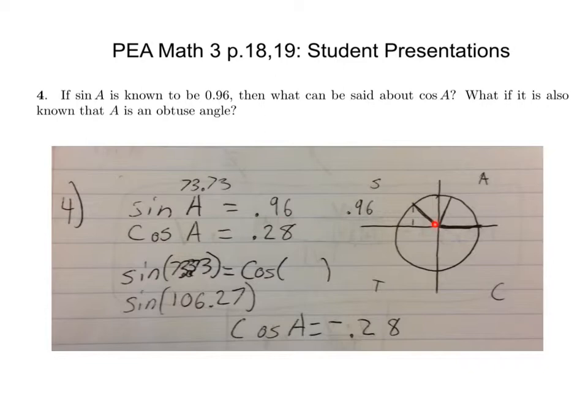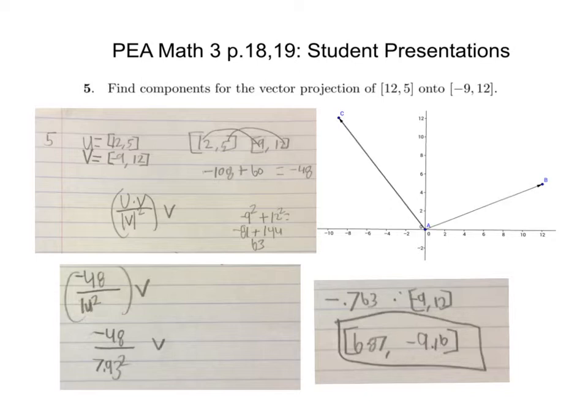For the obtuse angle, you put it in the second quadrant, and you find sine 106.27 equals cosine negative 2.8. So when you do the obtuse angle, what happens to the cosine? It becomes negative.